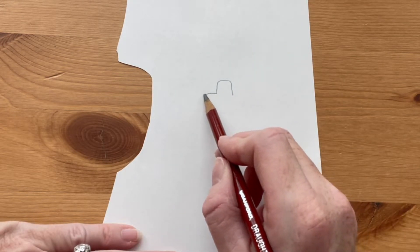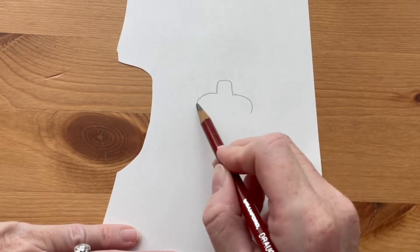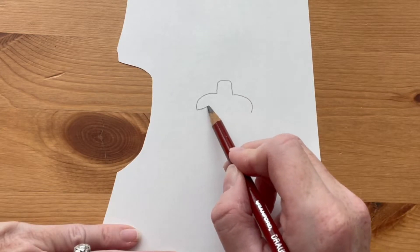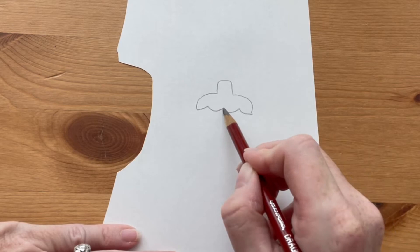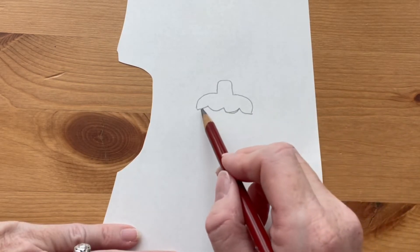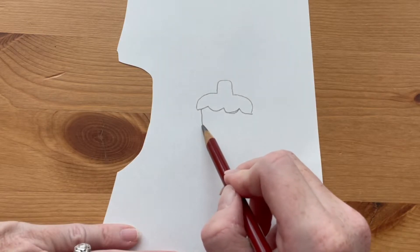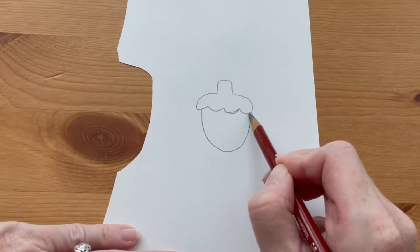The acorn cap is rounded on both sides like this, comes in just a little bit at the ends, and then you're going to scallop the edges. And then for the acorn part, start just a little bit in from the edge and make an oval with a slightly pointed end.